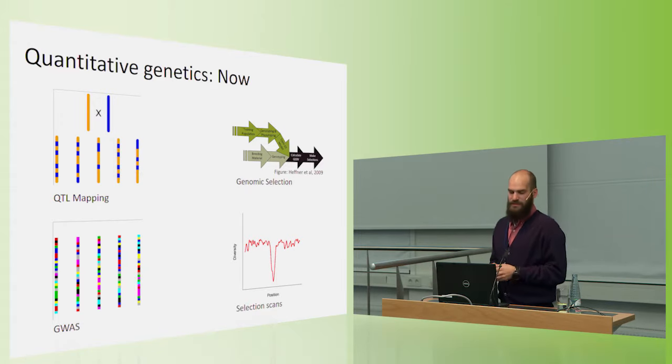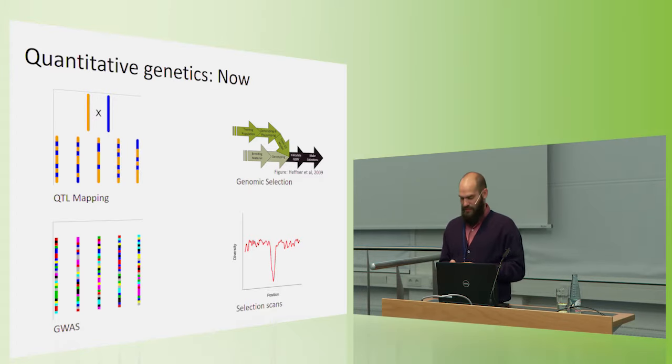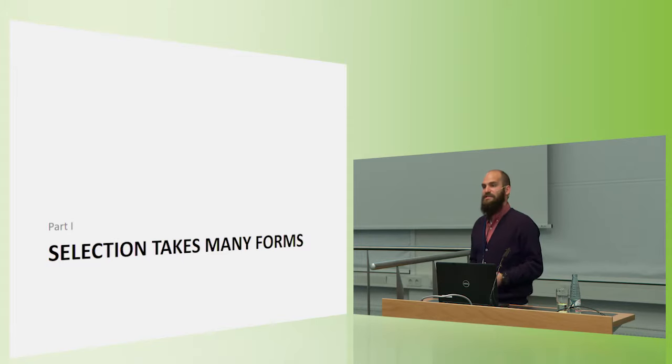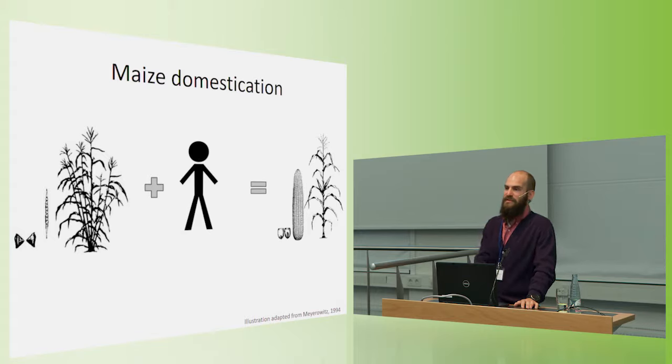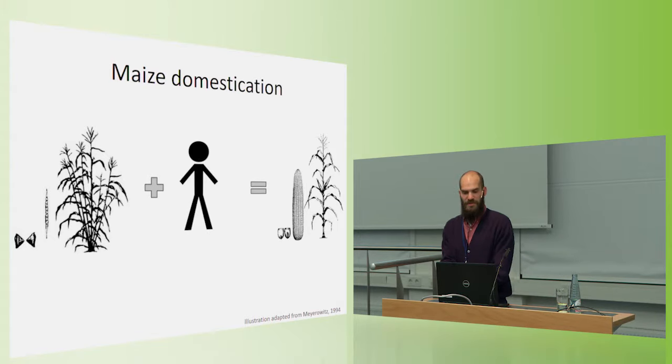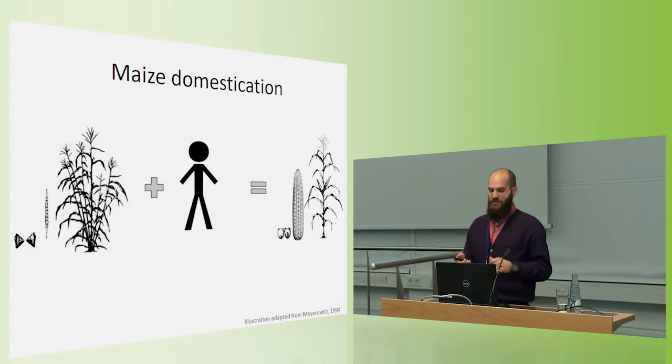So to motivate the rest of my talk when I'm going to get into selection on traits and how can we find that, I want to make the point that selection can take many different forms. Bruce yesterday told us a lot about some of the types of selection, whether we have hard sweeps or soft sweeps or incomplete sweeps or polygenic adaptation. And I want to use the story of maize domestication to demonstrate that there can be a complicated array of forms of selection that are affecting a population and that any single tool doesn't necessarily describe the whole situation.